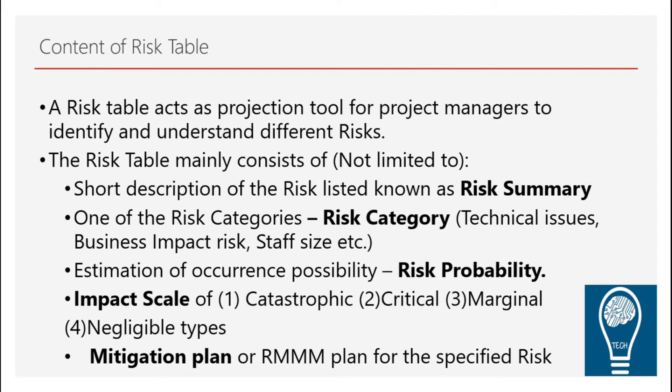This table includes a risk summary, which is a very short description of the listed risk. It has categories classified into different types — such as technical issues, business impact, staff size, and so on. Then we estimate the possibility or probability of those risks happening. This comes purely from the experience of project managers and certain algorithms we follow to calculate the probability.